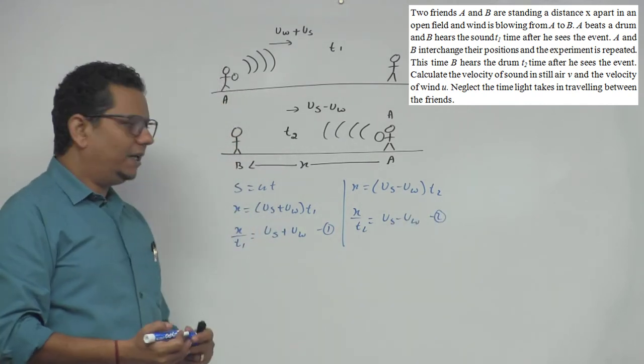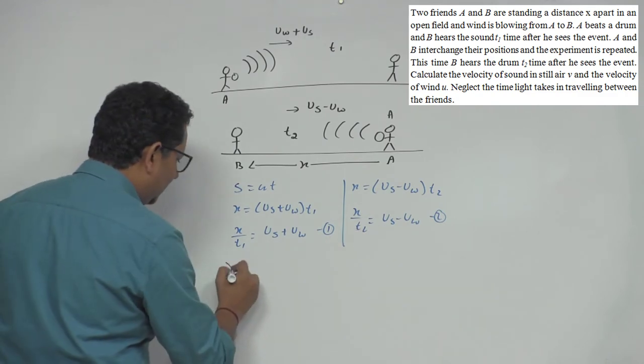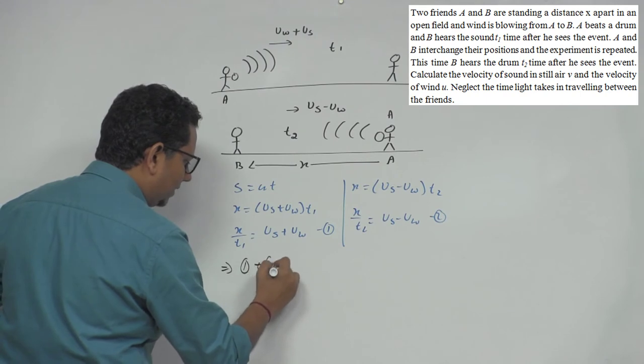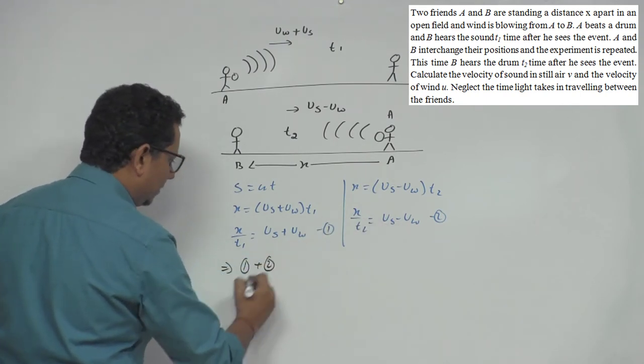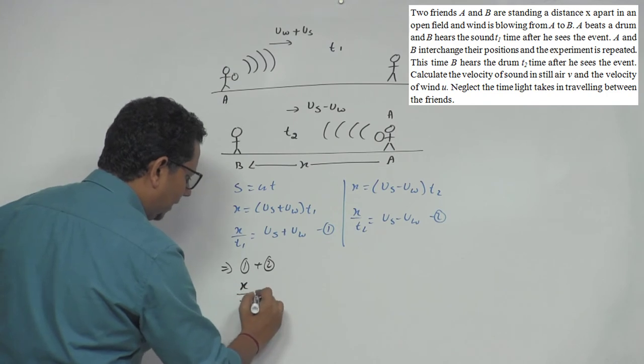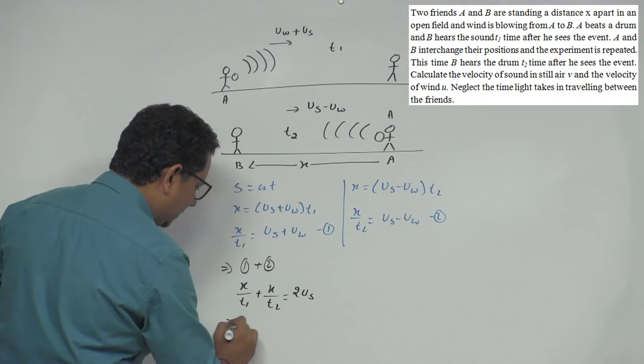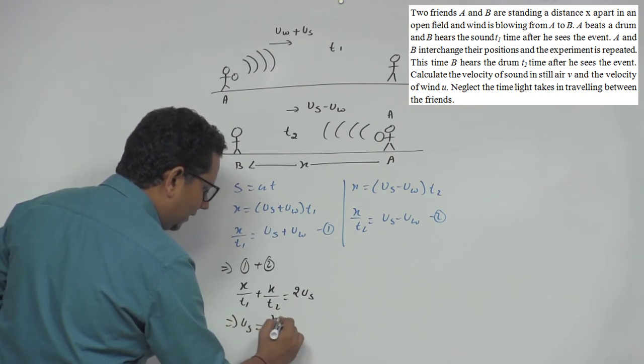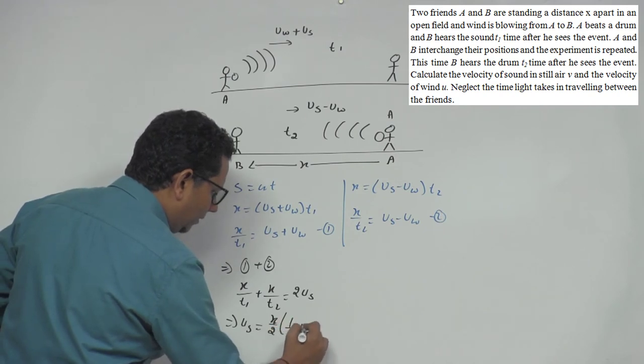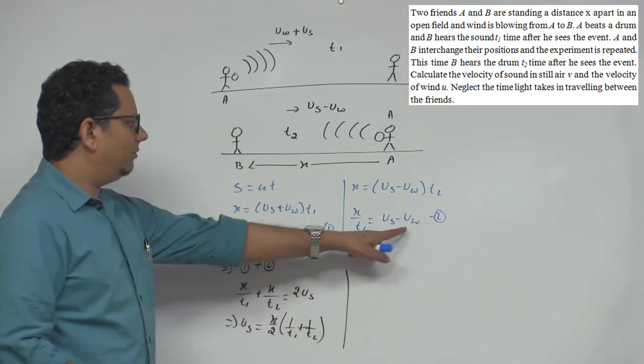Now if we want velocity of sound, we will add equation 1 plus equation 2. Velocity of wind cancels, so this will be X divided by T1 plus X divided by T2 will be equal to twice VS, which implies velocity of sound will be equal to 1 by 2, X common, 1 by T1 plus 1 by T2. This is the velocity of sound.